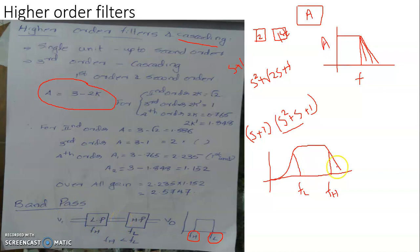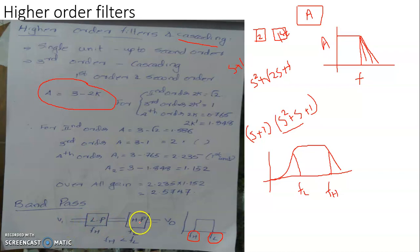A band pass filter exhibits two kinds of filter response: at the upper cutoff it behaves like a low pass filter, and at the lower cutoff it behaves like a high pass filter. When the range of frequencies passed by the filter is comparatively large, it is referred to as a wide band pass filter.